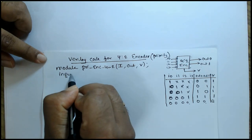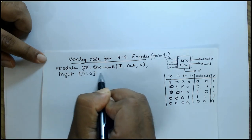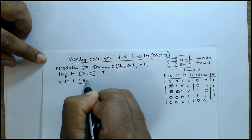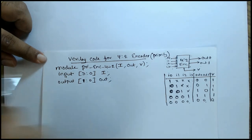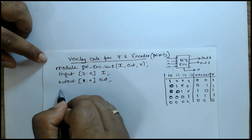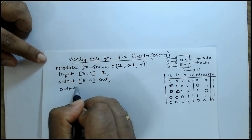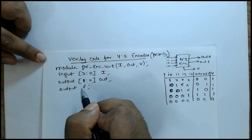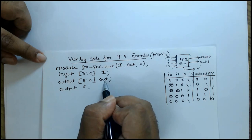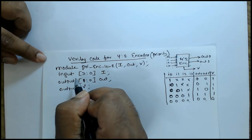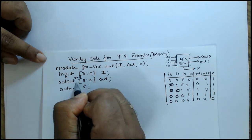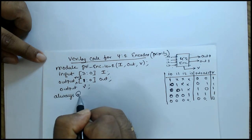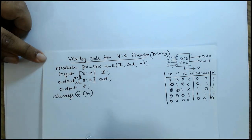Input is 4 bits [3:0] i, output is [1:0] out because output is 2 bits, and one more single-bit output v. These outputs are used inside the always block, so I declare them as reg. Always @* — as it's a combinational logic circuit I put a star.